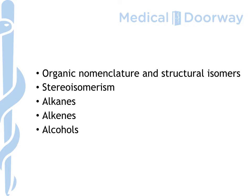Then we're going to move on to organic chemistry: organic nomenclature, how to name these compounds, and structural isomers. Then we'll look at stereoisomerism — EZ or cis-trans — as well as optical isomers and why they're important.